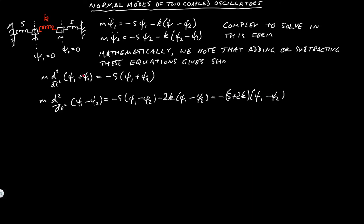So if you're willing to treat psi 1 + psi 2 as a single variable, we have simple harmonic motion, and similarly for psi 1 minus psi 2. Psi 1 + psi 2 is the centre of mass motion, or the average of the two oscillators. Psi 1 minus psi 2 is the relative separation — the change in relative separation of the two oscillators over time.